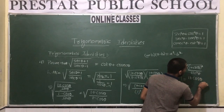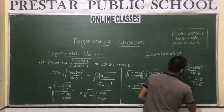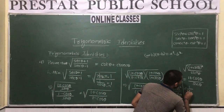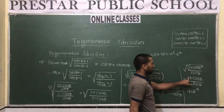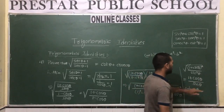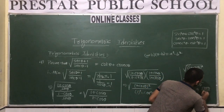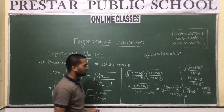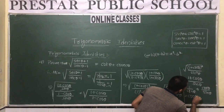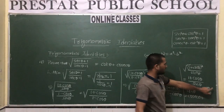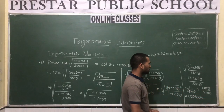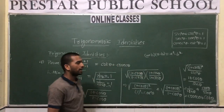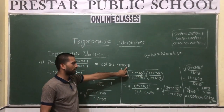Separating the terms: 1/sinθ + cosθ/sinθ = cosecθ + cotθ. This is the required RHS. Hence proved. If you know the formulas, then it is straightforward.